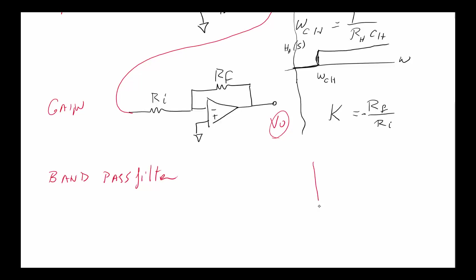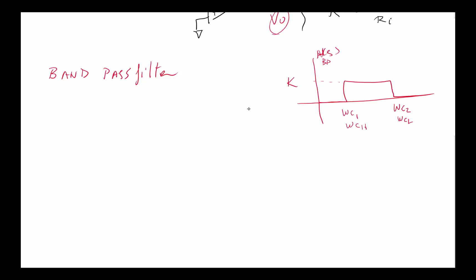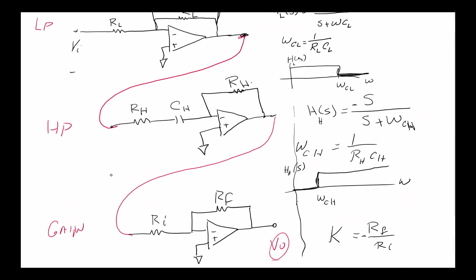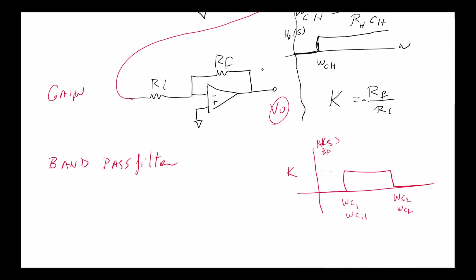My bandpass filter has a characteristic that looks like this, where this is sometimes called omega c2, but in our case this is omega c low pass. This is omega c1 in our derivation, which is the same as omega c high pass. The gain, how high this is, this is the H(s) total for the bandpass filter, and this gain is going to be K, whatever we decide to put in here.